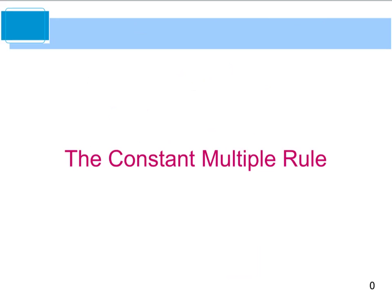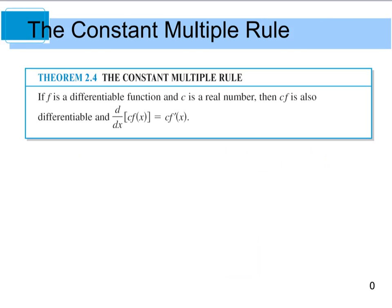The last thing we're going to look at today is called the constant multiple rule. The constant multiple rule says that if you have a differentiable function and some number C that's a real number, then if you take C and multiply it by F — and that is also differentiable — then we're just going to take that number C and multiply it by the derivative, and that will be the derivative of that function.